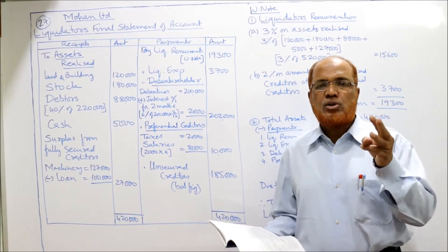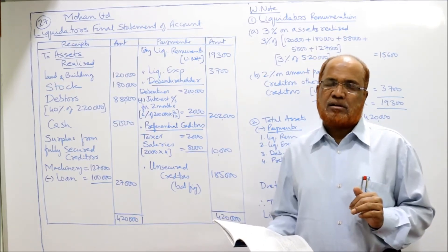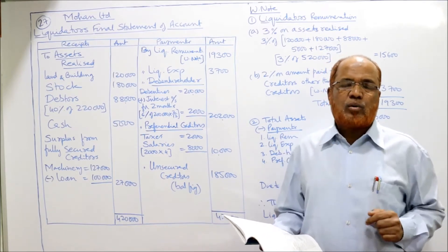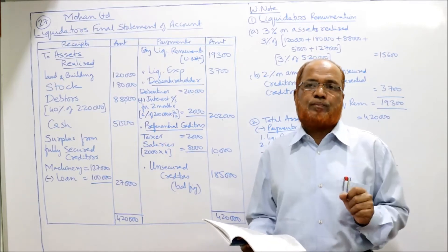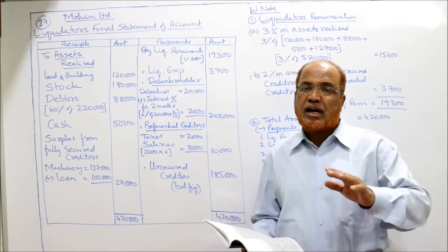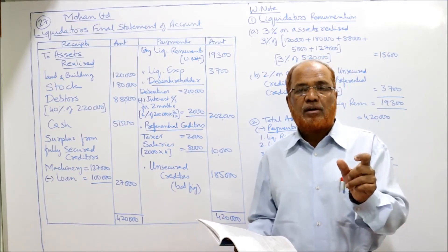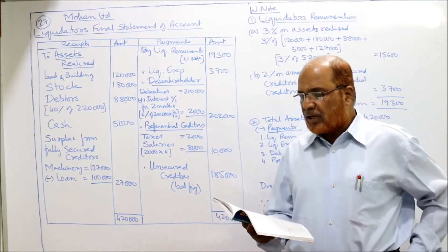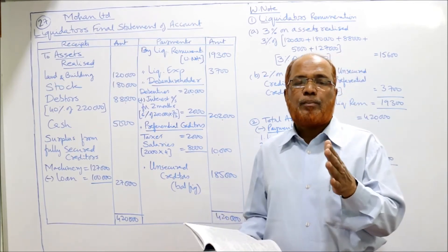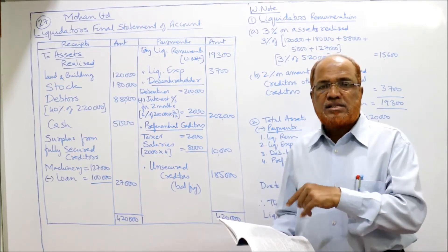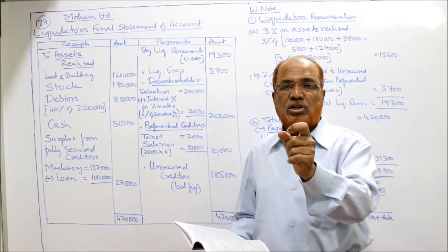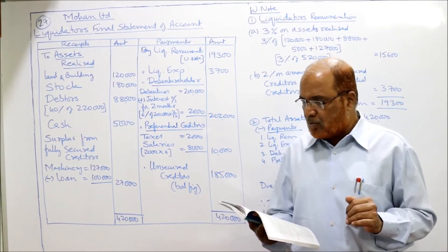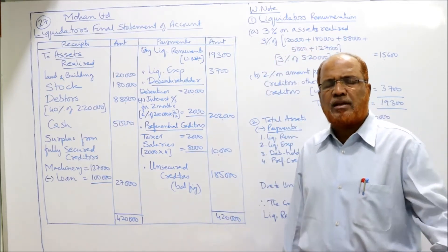Even the asset given as security — machinery — is sold by the liquidator himself, so while calculating liquidator's remuneration we include the value of machinery. The 2% commission is only on unsecured creditors, not on preferential creditors — so remuneration on preferential creditors is not calculated. Debenture holders were paid on 31st December 2010, along with 2 months' interest. The company was wound up on 31st October, so 2 months' interest (October to December) has to be paid to debenture holders.